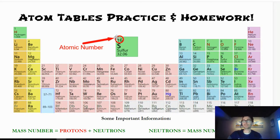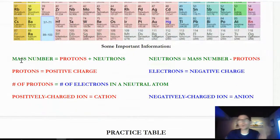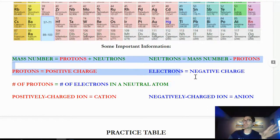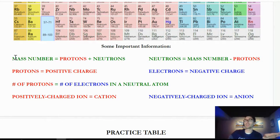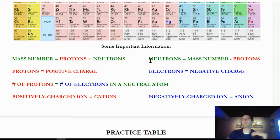The top number on each element is the atomic number — that's the number of protons in your atom. That's the straight-up definition of atomic number. I also have other important information here as a reminder. Mass number equals protons plus neutrons. If you have the mass number and the protons and want to figure out neutrons, you just do simple subtraction.